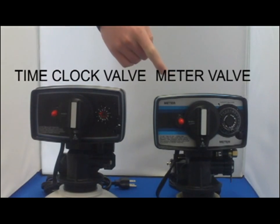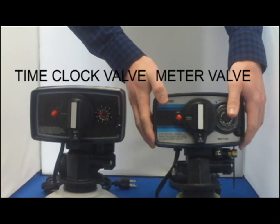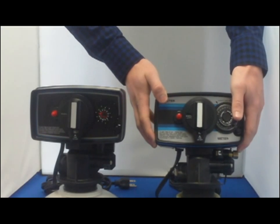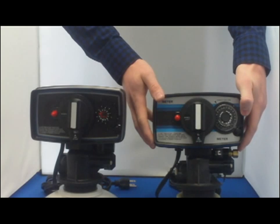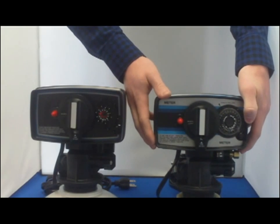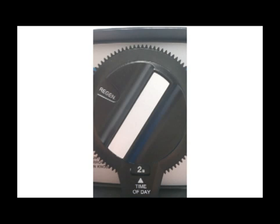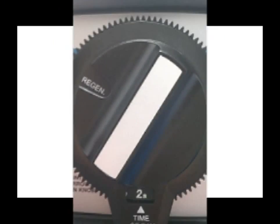First let's take a look at meter valves, also called volume initiated valves. These types of valves count gallons of water passing through the system. When the programmed volume of water has been used, the system will automatically regenerate itself at 2 a.m. unless the default settings have been altered.